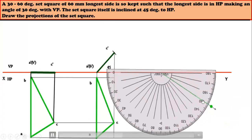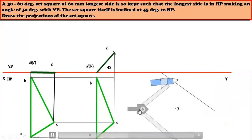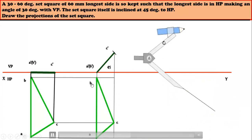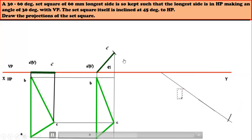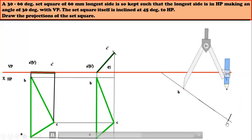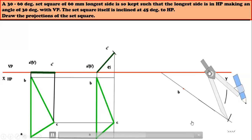Third position: inclination with respect to VP is given as 30 degrees. Keep the protractor at a convenient distance and draw an inclination line at 30 degrees. The problem states the longer edge should be on VP, so here the longer edge is AB. Measure AB from the second position and mark it on the 30-degree inclination line — name the points B and A. AB is the edge in HP inclined to VP at 30 degrees. Then measure B to C and from A as center cut an arc to C.